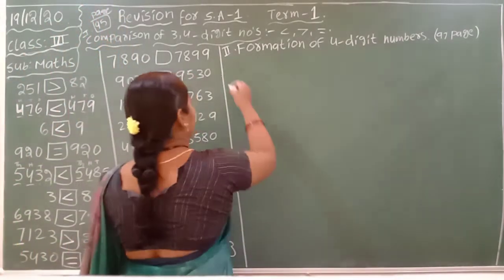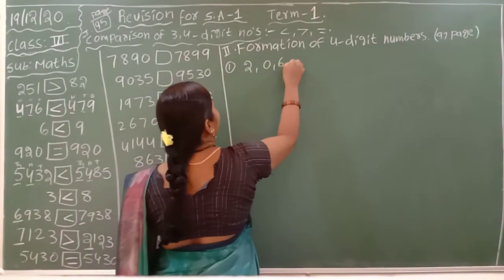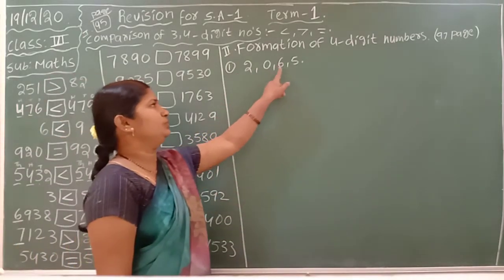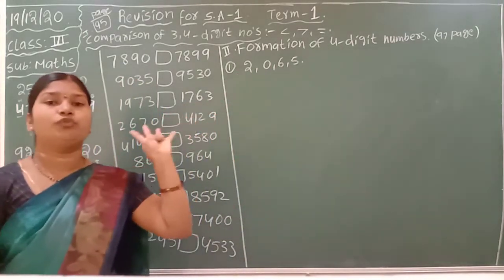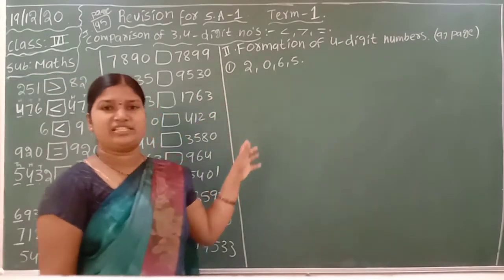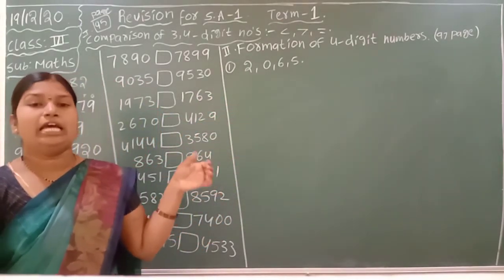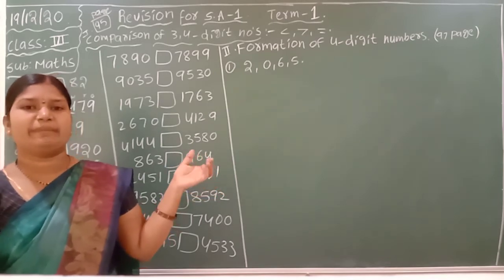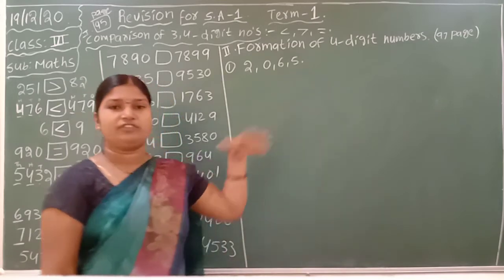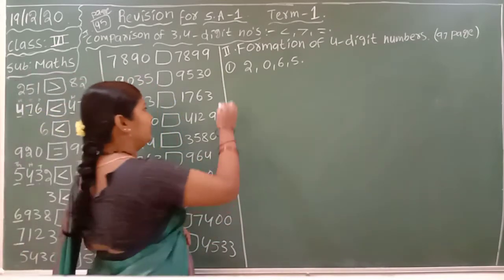For example, they give the digits 2, 0, 6, 5. I took 4 digits separately. These are called digits when we are keeping commas between them. If we are not keeping commas it is known as a number. Using these digits, we have to form the smallest number and the greatest number.